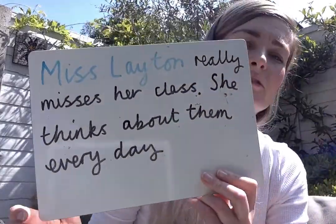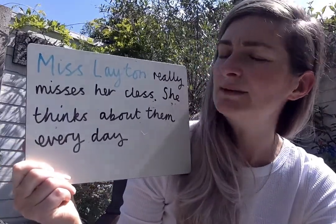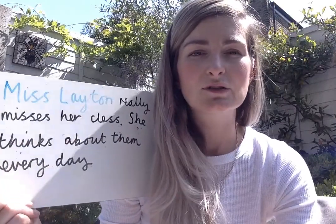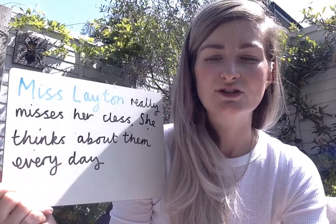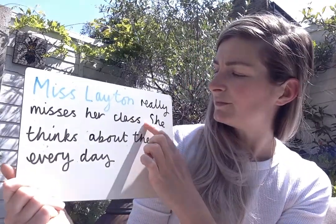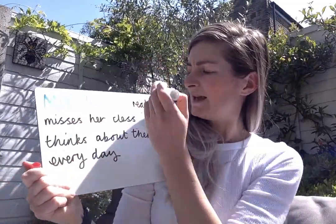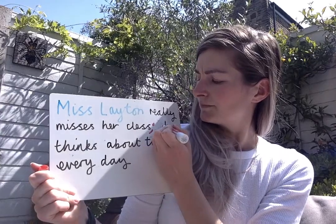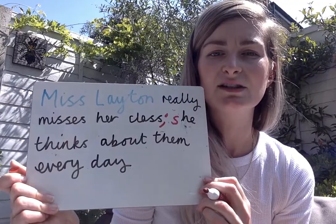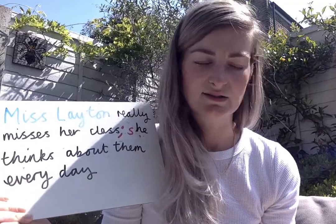Semicolons are used to connect two main clauses. I wrote Miss Layton in blue because I'm feeling special. 'Miss Layton really misses her class, full stop. She thinks about them every day.' So what I could do is instead of using my full stop and my capital letter, I could swap my full stop for a semicolon here. 'Miss Layton really misses her class, semicolon, she thinks about them every day.' And literally that's how easy it is to use a semicolon.